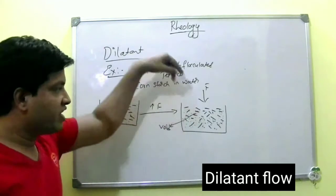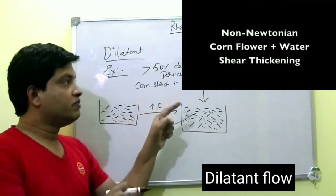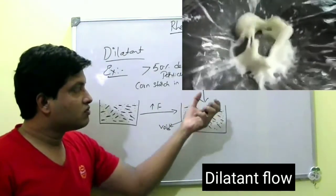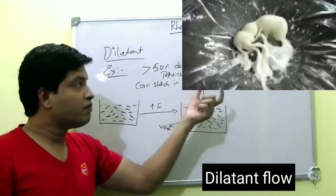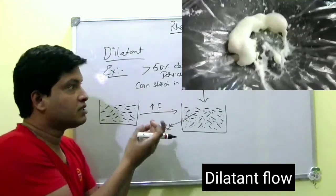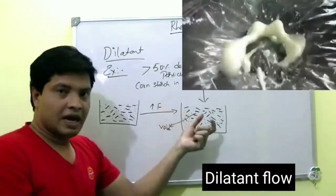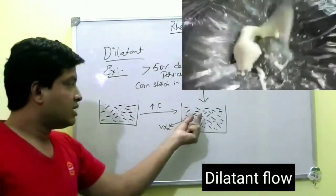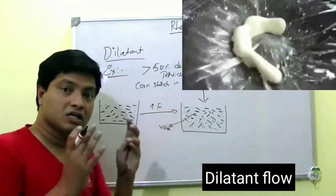The white space and the cornstarch molecules together act as solid. You can feel it as solid. Regarding this, I have given a video — just check that video. You can clearly see that cornstarch, which is a liquid, becomes solid when music (shear stress) is applied. When they stop the music, it becomes liquid again. This happens because due to a certain shear stress, the water molecules escape, creating white space, and the system behaves as solid.